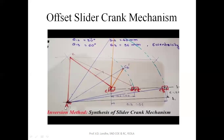Using a compass with center A, draw an arc passing through C2 which cuts the reference line at C2-dash. Similarly, with center A, draw an arc from C3 that cuts the line at C3-dash. After getting points C2-dash and C3-dash, draw lines joining C1 to C2-dash and C1 to C3-dash. Draw perpendicular bisectors to both lines C1–C2-dash and C1–C3-dash. These two perpendicular bisectors meet at point B, which is the initial position of the crank. Then join A to B and B to C1.